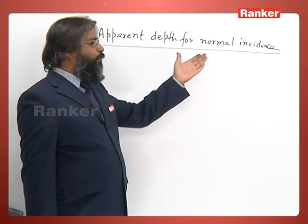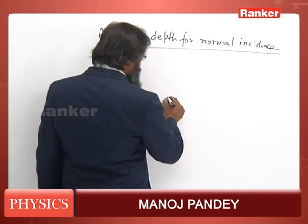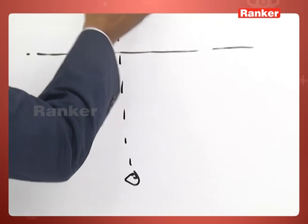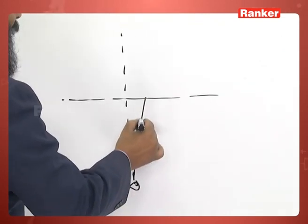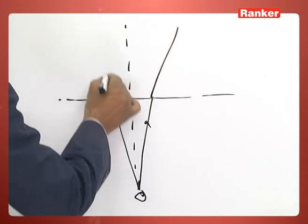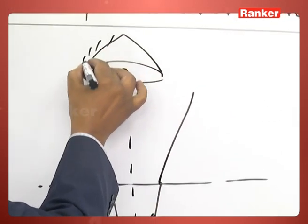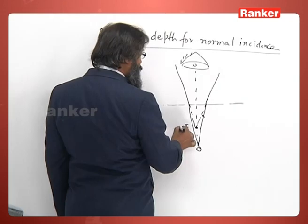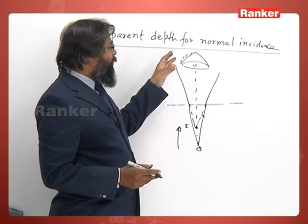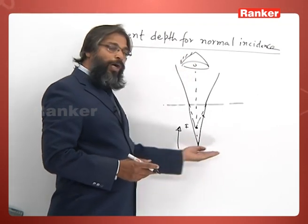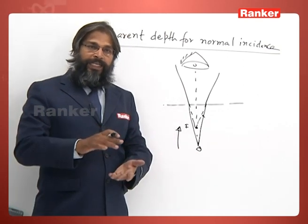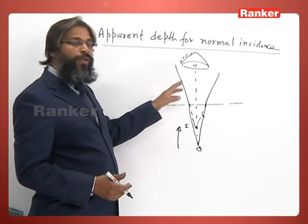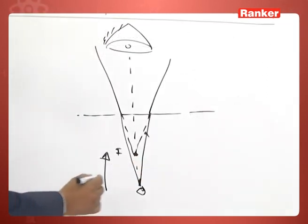Let us see apparent depth for normal incidence. We have observed that if we look inside water where there is a coin and look from above, the ray goes like this. We find that the object appears to be formed higher up — this is what apparent depth is for normal incidence. If the bottom of an aquarium appears to be raised when seen normally, this is called apparent shift for normal incidence.